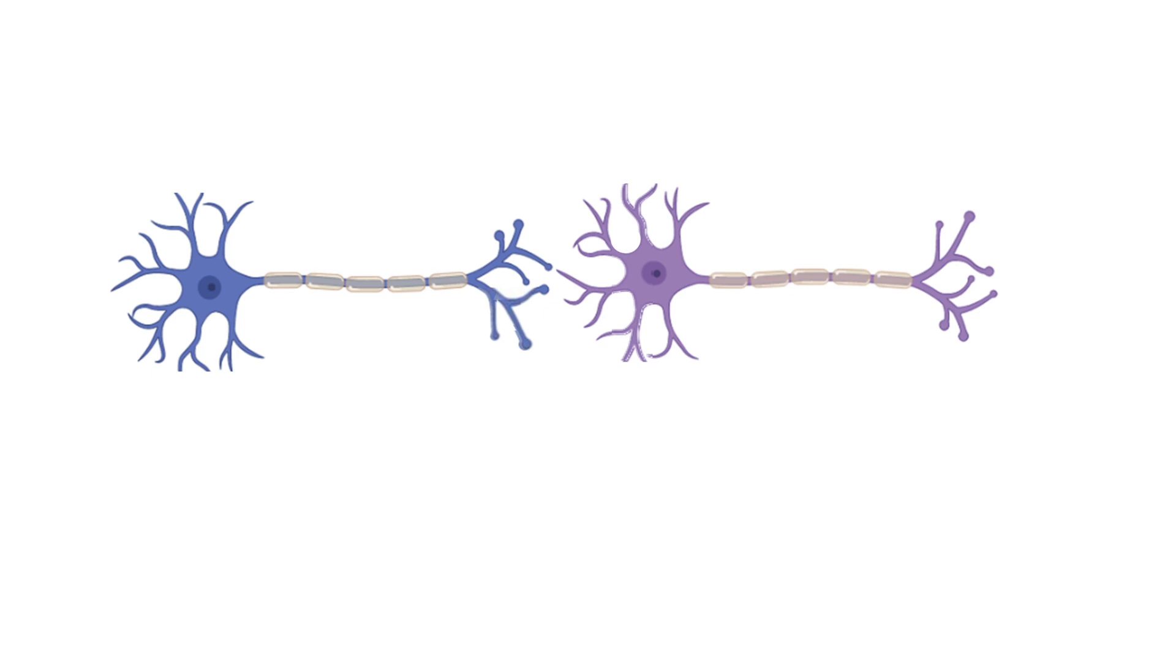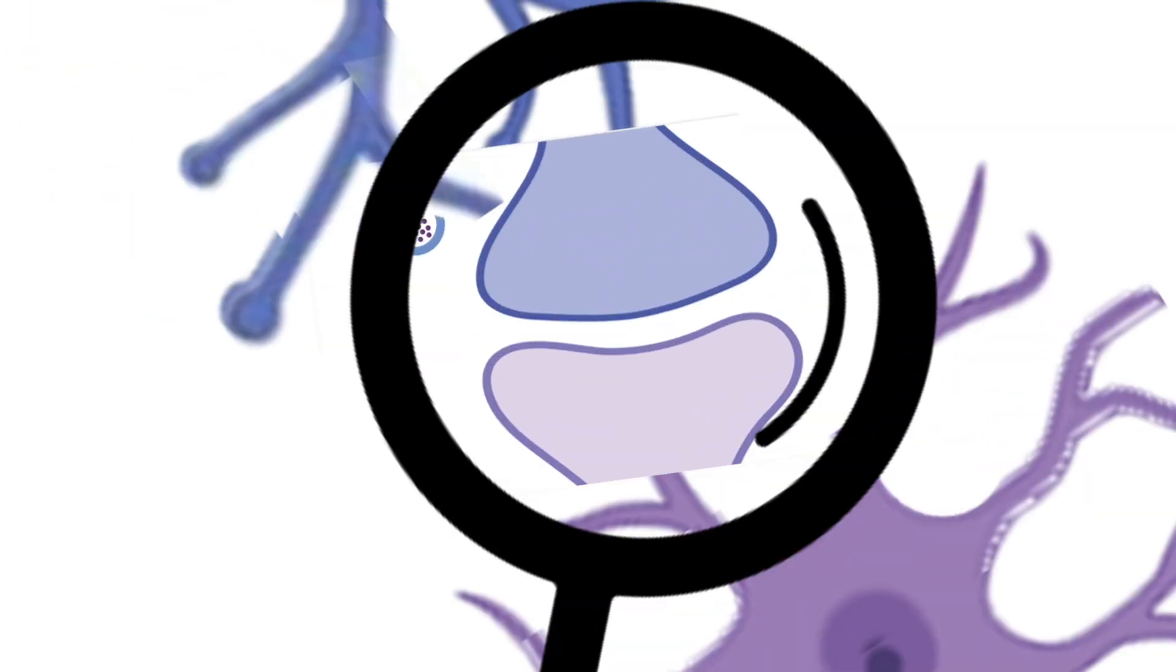The communication between two neurons happens between the synapses in a very small space called the synaptic cleft. We will first discuss neuronal communication without facilitation to get a baseline understanding. There are a few key players here.